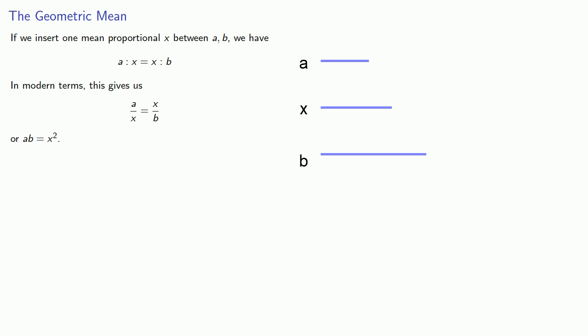So another term that will show up is the geometric mean, and that comes from inserting one mean proportional. So if we insert one mean proportional, x, between a and b, we have a is to x as x is to b. And in modern terms, this gives us a over x is x over b, or cross-multiplying a b is equal to x squared.